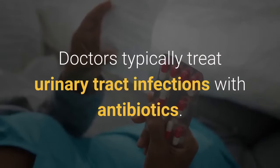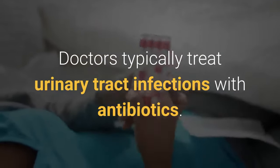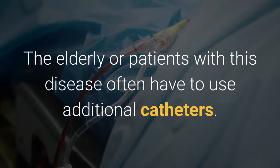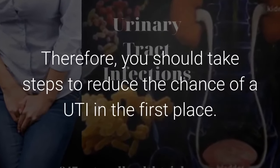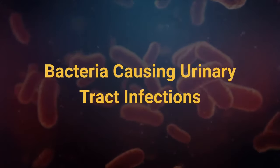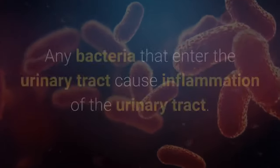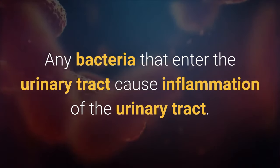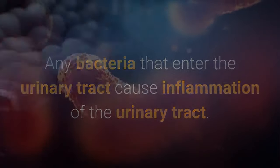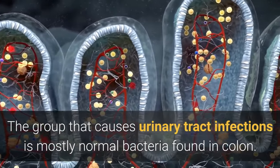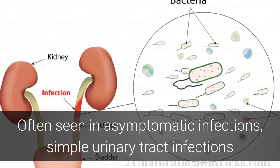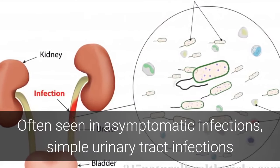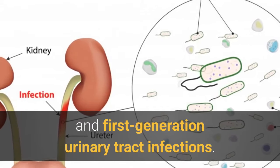Young women who have premature sexual activity have the highest risk. Doctors typically treat urinary tract infections with antibiotics. The elderly or patients with this disease often have to use additional catheters. Therefore, you should take steps to reduce the chance of a UTI in the first place. Any bacteria that enter the urinary tract cause inflammation. The group that causes urinary tract infections is mostly normal bacteria found in the colon, often seen in asymptomatic infections, simple urinary tract infections, and first-generation urinary tract infections.